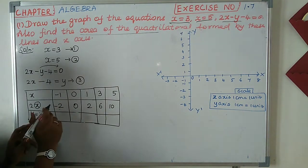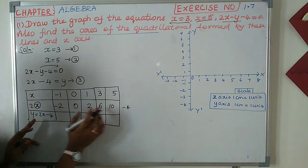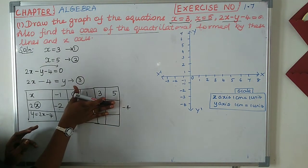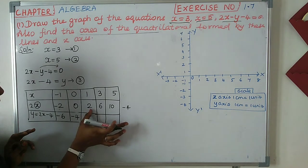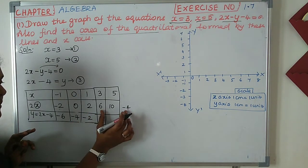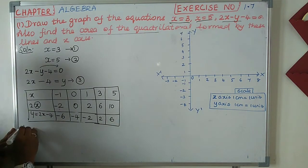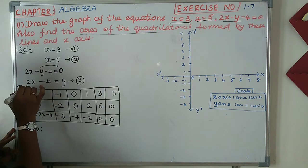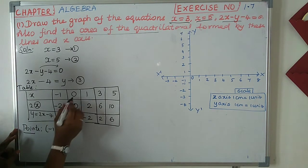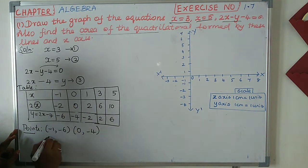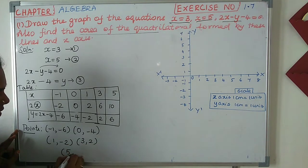Minus 2 minus 4 is minus 6; 0 minus 4 is minus 4; 6 minus 4 is 2; 10 minus 4 is 6. Now we have the points to be plotted from the table. x = -1 gives y = -6; x = 0 gives y = -4; x = 1 gives y = -2; x = 3 gives y = 2; x = 5 gives y = 6.